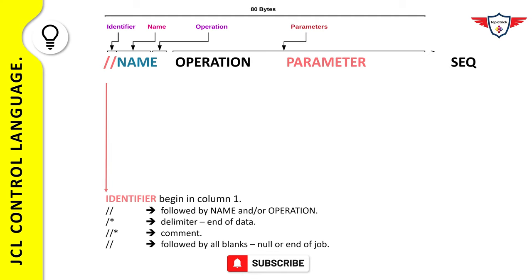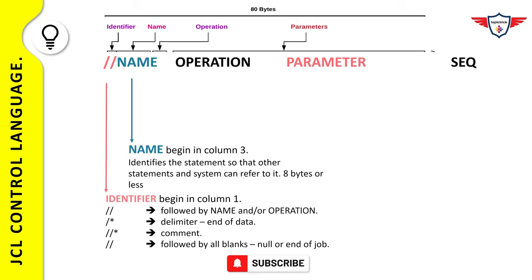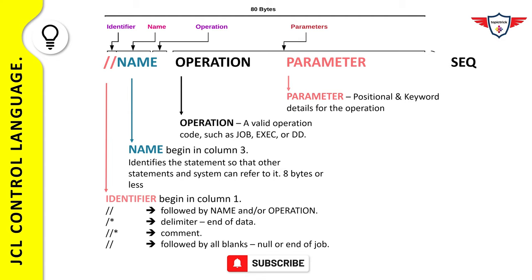The name field begins in column three and is used to provide the name to a JCL step. For a job statement, you must specify the name. For EXEC or DD statements, it is optional. The minimum name length is one and the maximum is eight characters. The operation field specifies a valid operation code such as JOB, EXEC, or DD. The parameter field specifies the parameters based on the operation field — there are two kinds: positional parameters and keyword parameters.